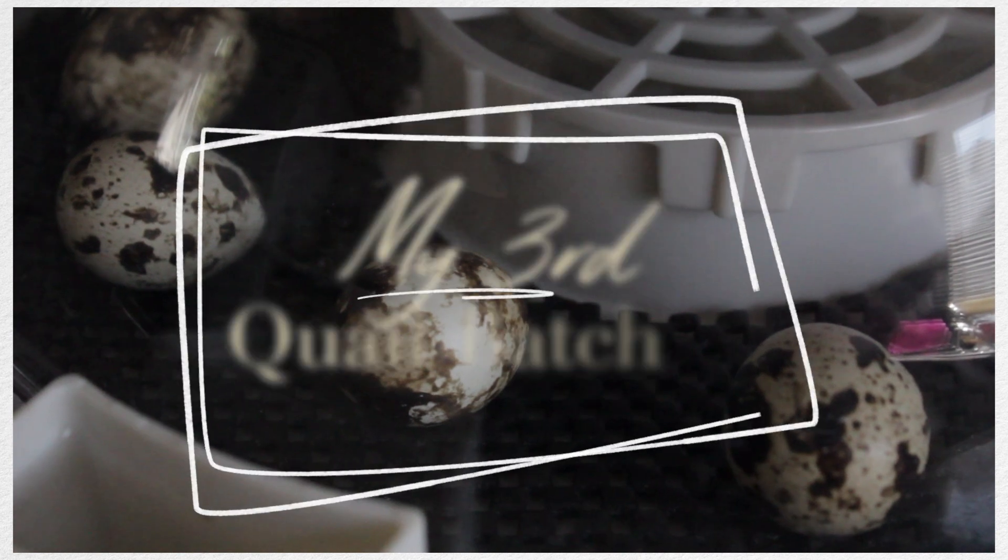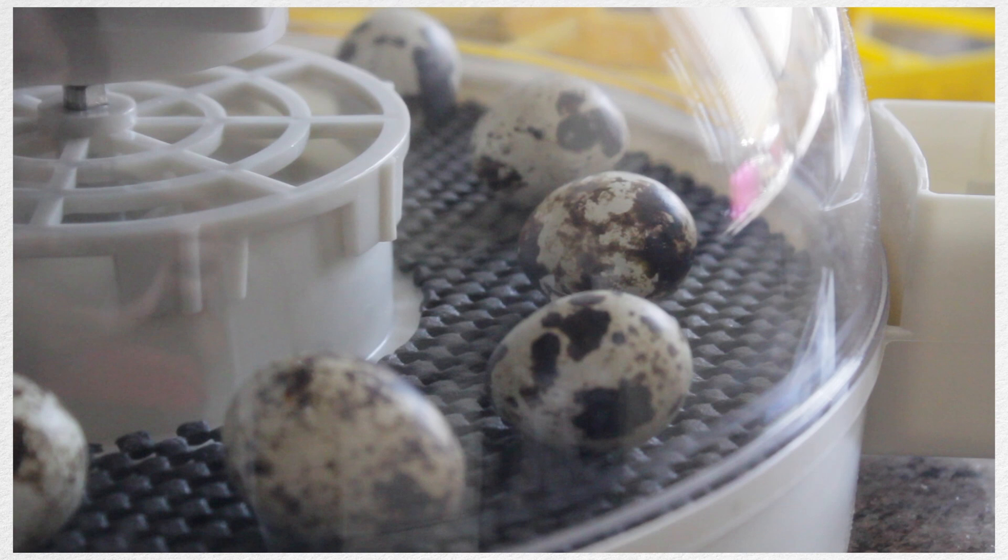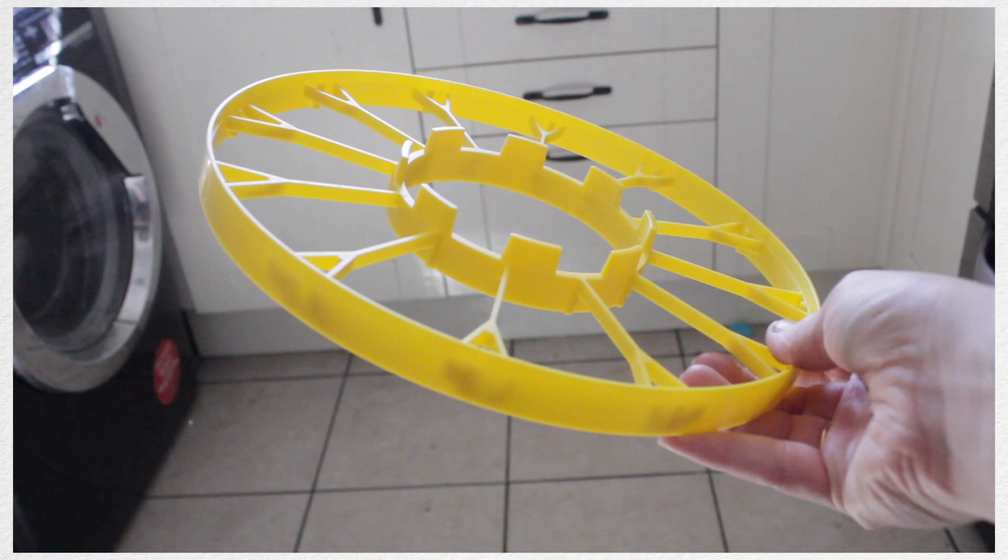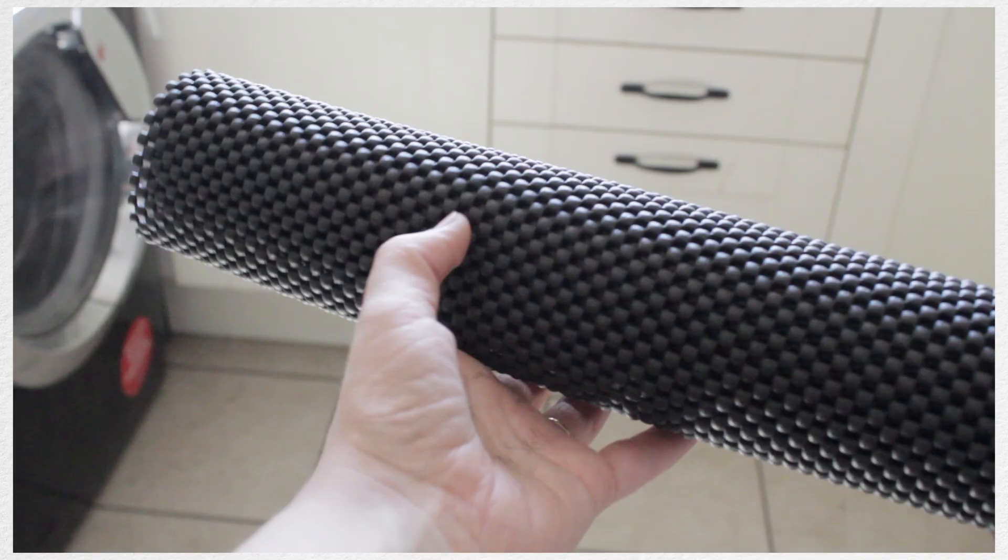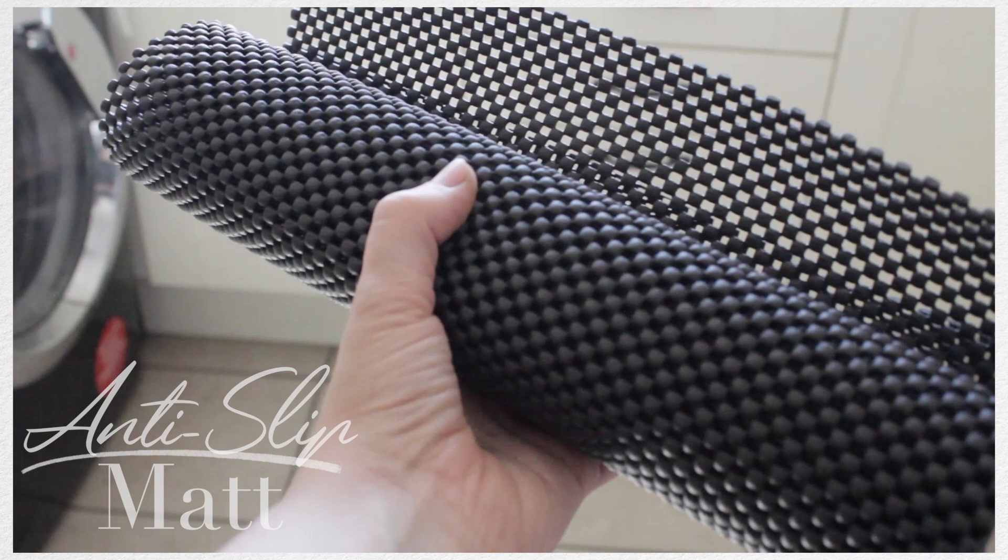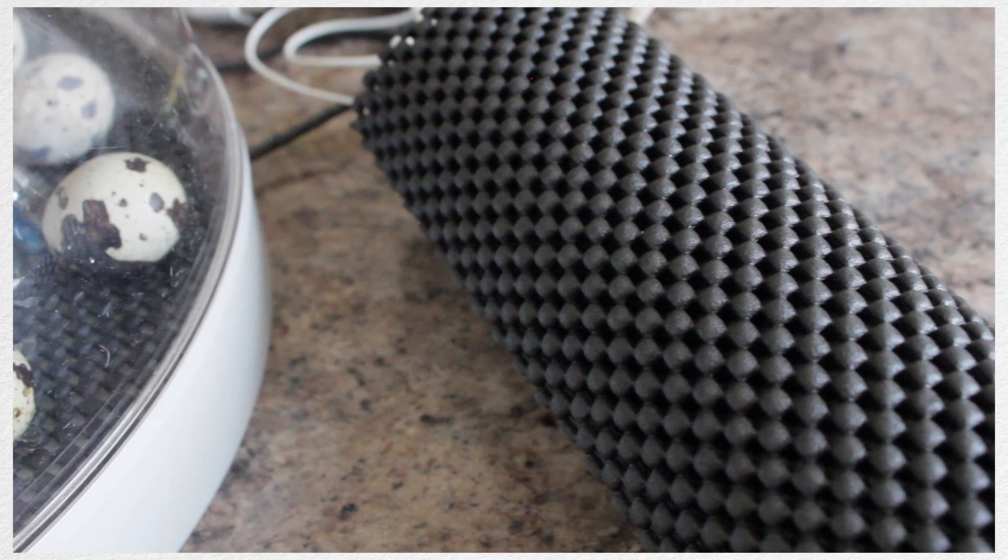This is now my third round of hatching quail and there's quite a few things that I've learned along the way. Some of them were nice lessons, some not so nice, but the main one and probably the easiest was to just put an anti-slip mat on everything.